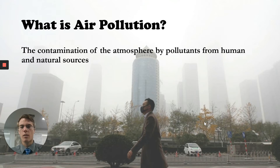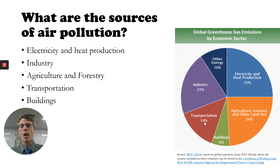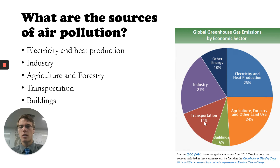What are some of the sources of air pollution? Electricity and heat production is our greatest percentage of air pollution, largely because much of it is produced by fossil fuels — coal is one of the main drivers behind electricity production. Agriculture also produces a lot of air pollution through chemicals, fertilizers, and livestock. Transportation is another big contributor, as well as general industry and buildings.